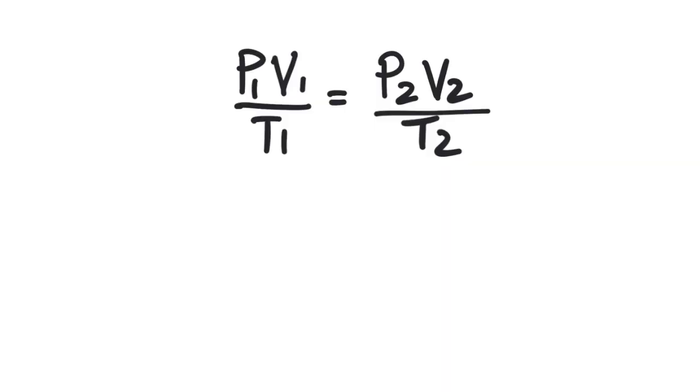The combined gas law describes the relationship between the volume, pressure, and temperature of a gas when the amount of gas is kept constant. The combined gas law can be described by an equation that looks like this: P1V1/T1 equals P2V2/T2.